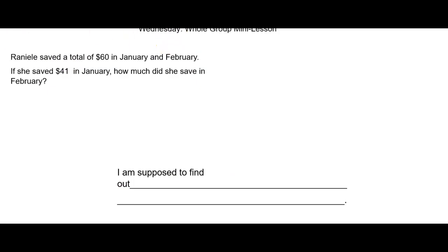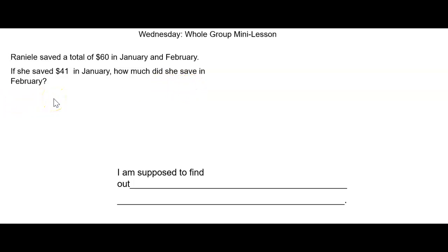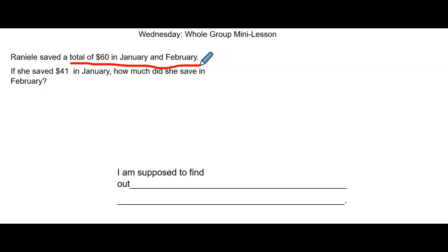Now let's look at our problem for today. Boys and girls, the problem says: Hanyele saved a total of $60 in January and February. If she saved $41 in January, how much did she save in February? Let's go ahead and draw a part-part-whole diagram, because it says that Hanyele saved a total of $60 in January and February. So total means this is the whole number.